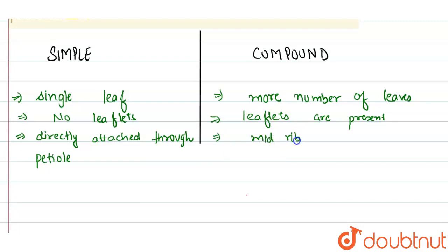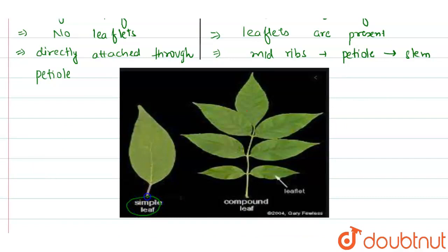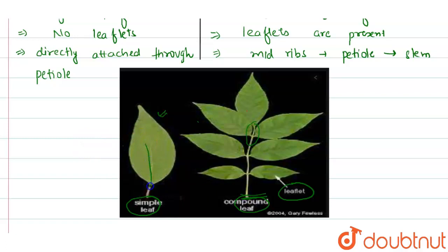In case of compound leaves, leaflets of different leaves are attached with a petiole, and then this petiole is further attached to the stem. From the diagram, we can see the image of both simple and compound leaf. In simple leaf there is only a single leaf, whereas in compound leaf leaflets are present. The mid ribs join to the petiole, and then the main petiole is attached to the stem, whereas in simple leaf the mid rib is directly attached to the stem via petiole.